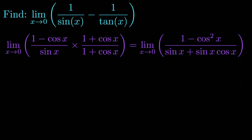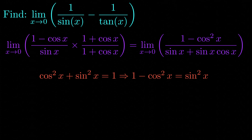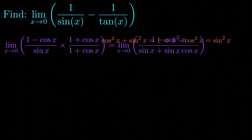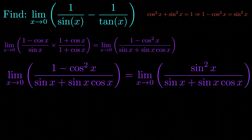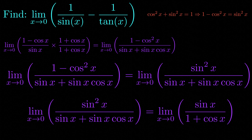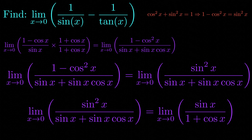Now we know that cosine squared of x plus sine squared of x is equal to 1, which implies that 1 minus cosine squared of x is equal to sine squared of x. This allows us to rewrite the limit as the limit as x approaches 0 of sine squared of x divided by sine of x plus sine of x times cosine of x. We can cancel a factor of sine of x, leaving us with the limit as x approaches 0 of sine of x divided by 1 plus cosine of x.